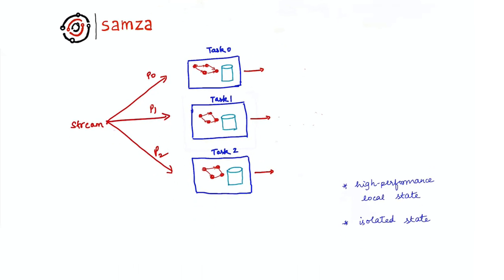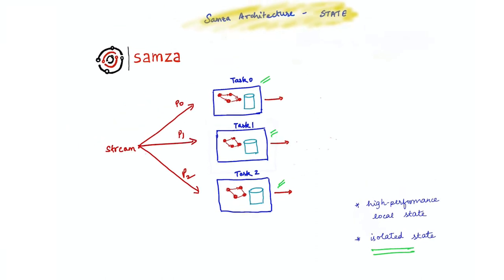The state store associated with each task is isolated and only stores data corresponding to the partitions processed by that task. This is important. When you scale out your job by giving it more computational resources, Samza can transparently migrate its tasks from one machine to another without affecting the overall application.